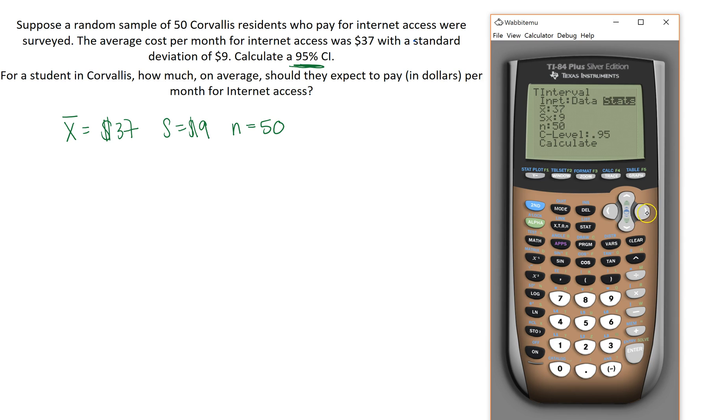For the confidence level, make sure you always put the point in front of it. It has to be a proportion in the calculator. So 0.95 for 95%, and press calculate.